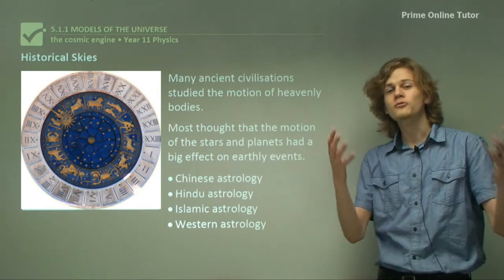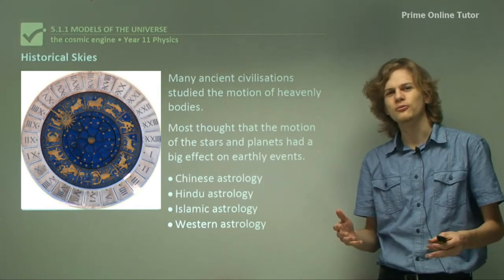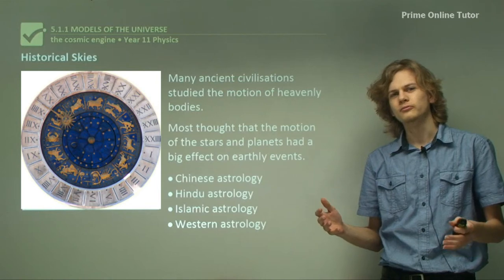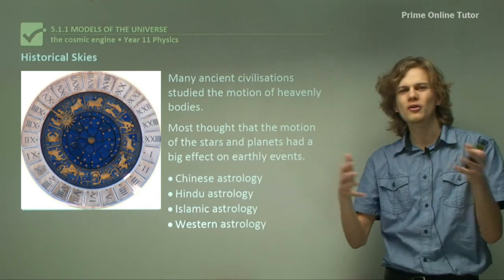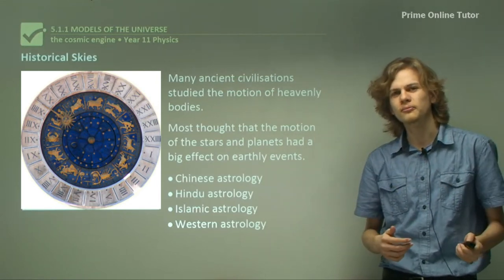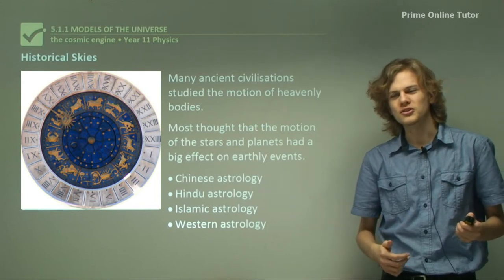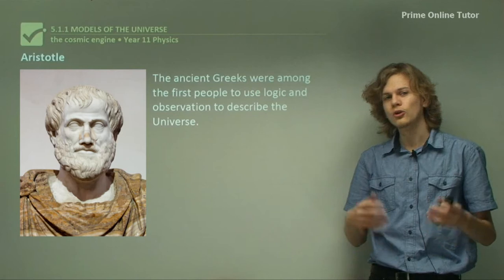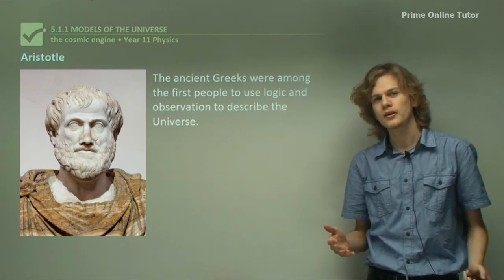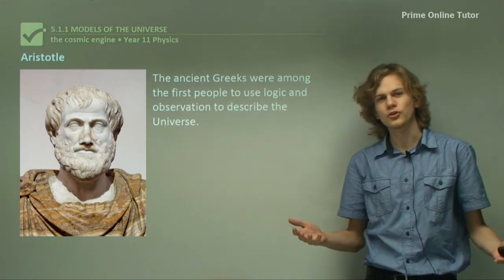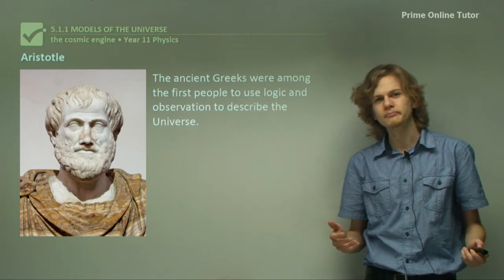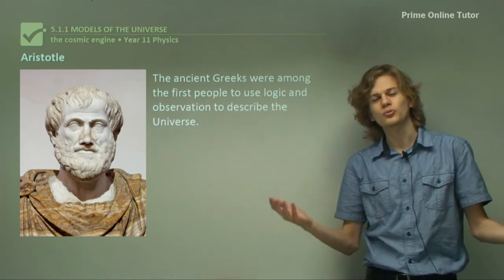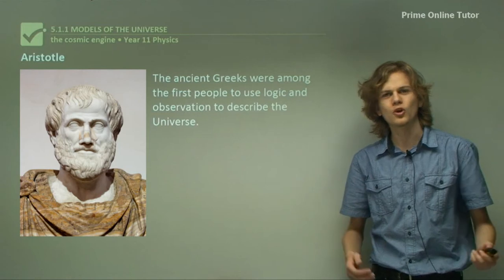So we have some observations of the sky but we don't really have an ordered system of arranging where everything lies in the universe. And so we go to Greece. The ancient Greeks were among the first people to use logic and observation to describe the universe. There were plenty of philosophers and scientists around Greece at this time and they wanted to create models of everything to describe how it worked.